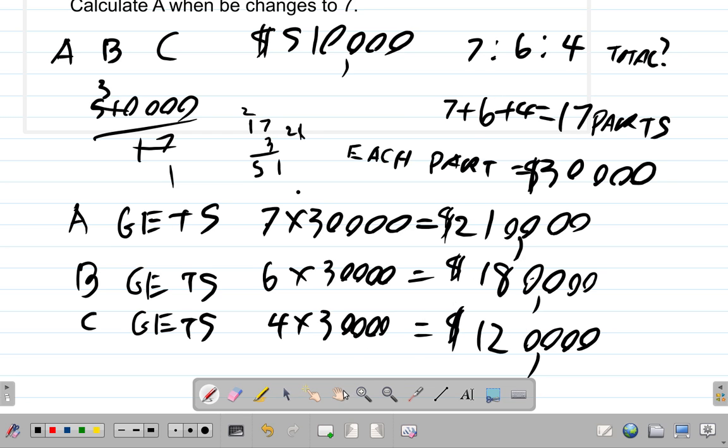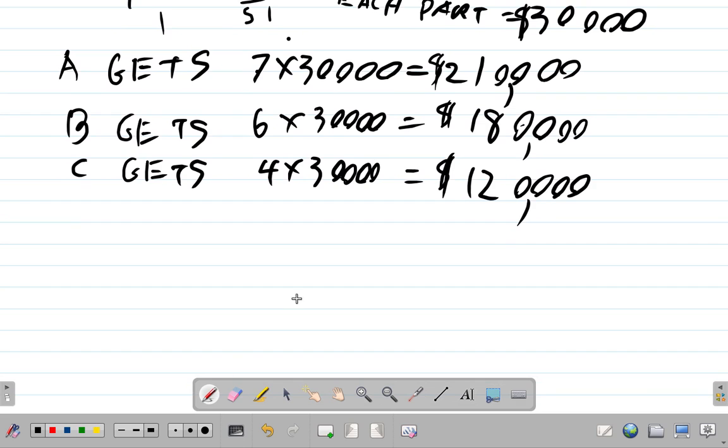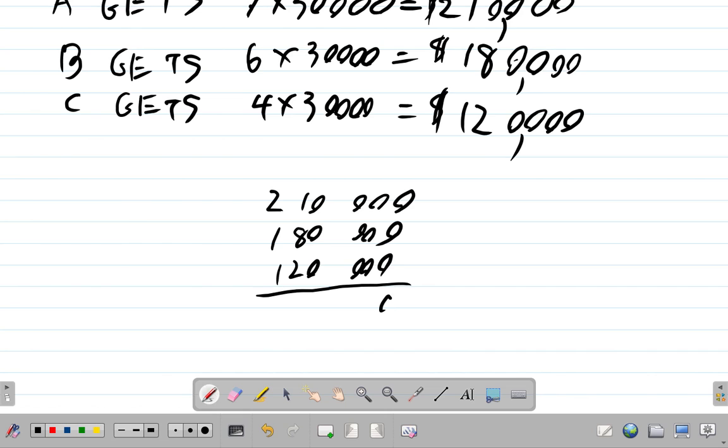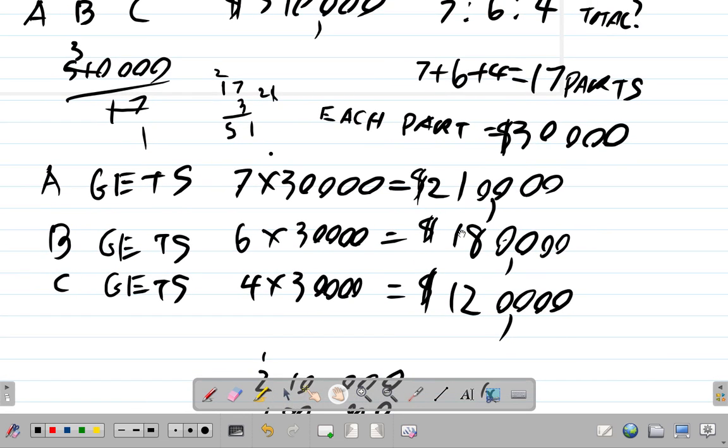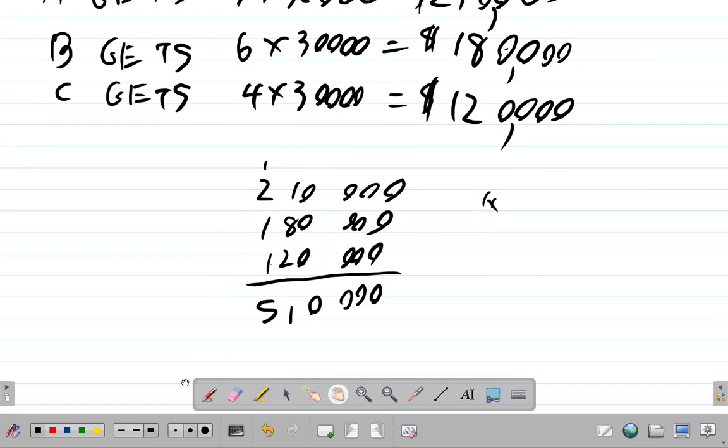And they should all add up back to 510,000. You could check and see, 210,000 plus 180,000 plus 120,000. If you add them up, you get 0, 0, 0, 0. 8 and 2, 10 and 1, 11, 11, bring 1, carry 1. 2 and 1, 2 and 1, 4 and 1, 5, 510,000 dollars. This shows how much each person gets. A gets 210,000, B gets 180,000, C gets 120,000 dollars.